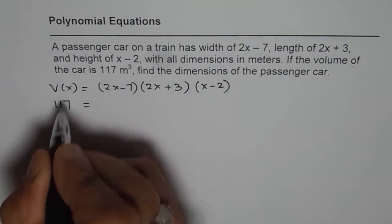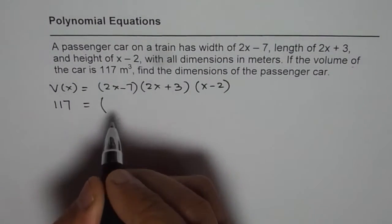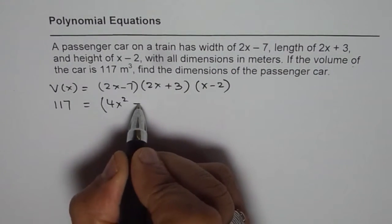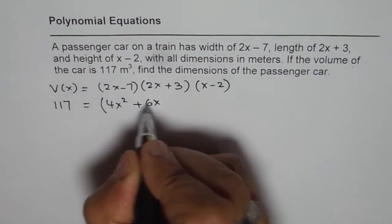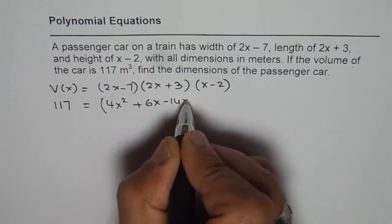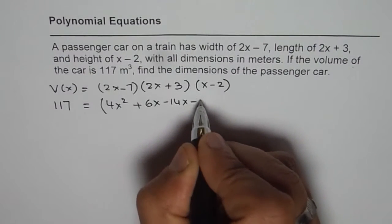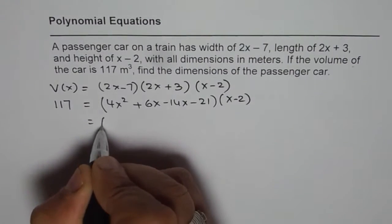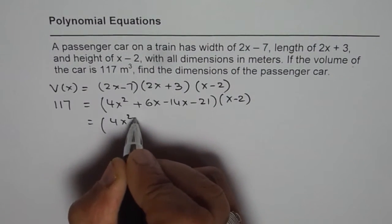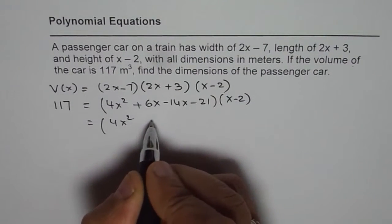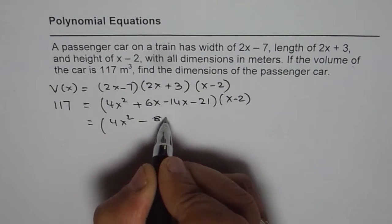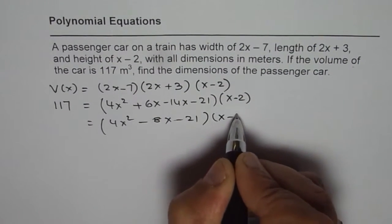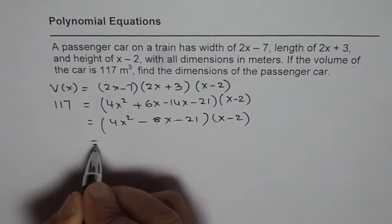We can write 117 for the volume and expand. 2x times 2x is 4x squared, and then we have plus 6x minus 14x minus 21, all times (x-2). We combine the like terms: 4x squared, and 6x minus 14x gives minus 8x, so we have (4x squared minus 8x minus 21) times (x-2).